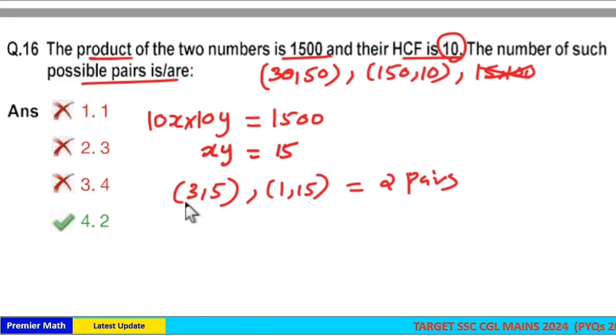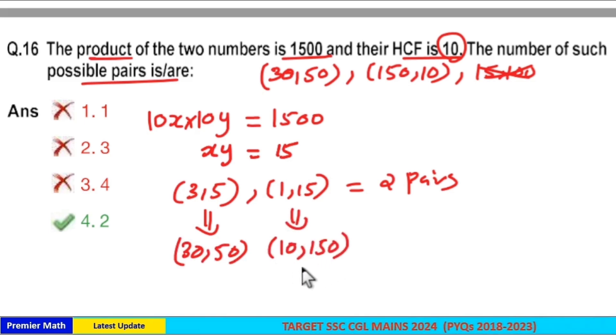Now, you can see xy HCF is 1 then 10x, 10y, HCF should be 10. That is, here xy HCF is 1 then 10x is 30 and 50 HCF is 10 and here which is equal to 10 and 150. So, HCF is 10. So, condition satisfied.